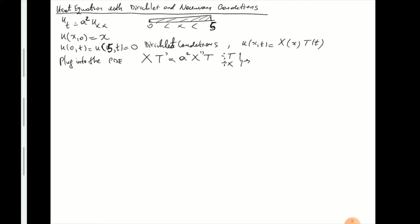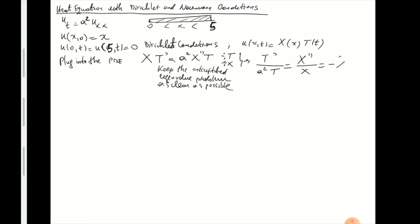It's practical as a rule of thumb to keep the anticipated eigenvalue problem as clean as possible, because it's easier to recognize it as one done before. I'm already anticipating that X will be my Sturm-Liouville problem. So I'm going to move the constant a² to the left side as well. Therefore, after separating, this becomes T'/(a²T) = X''/X, and now I introduce the separation constant λ.